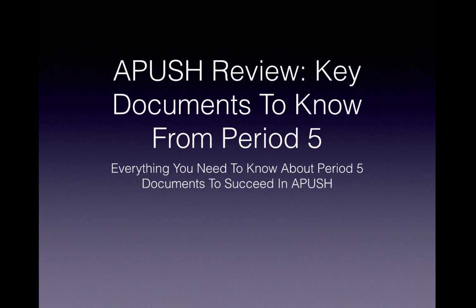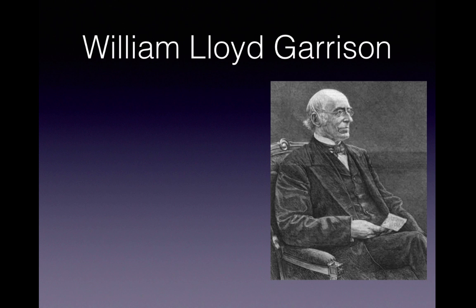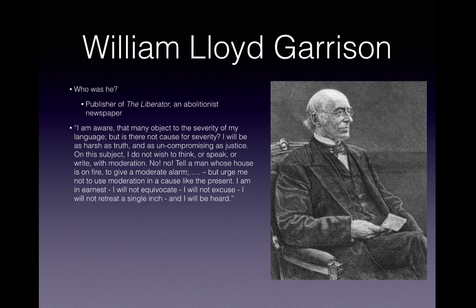Let's start off talking about William Lloyd Garrison. Even though he started in 1831 with his newspaper, The Liberator, he was still around in the 1860s, so he is a part of Period 5. He was the publisher of The Liberator, which was an abolitionist newspaper. Here is a document you could encounter.